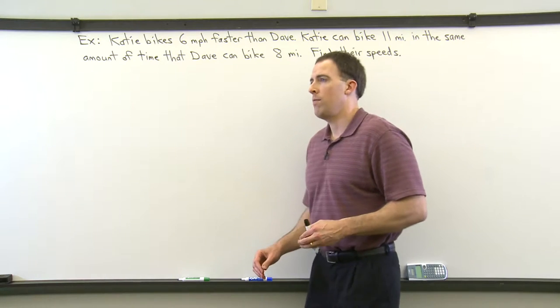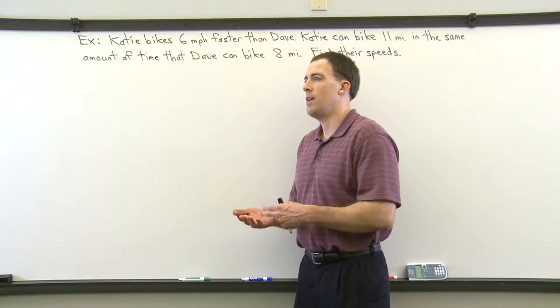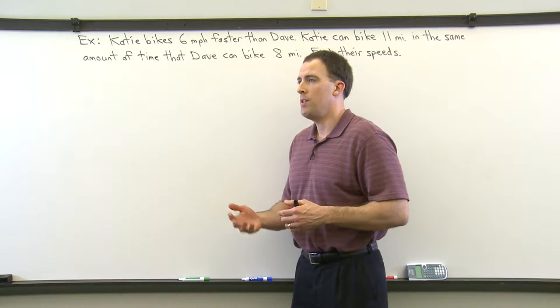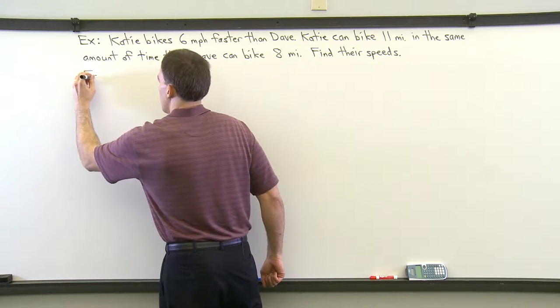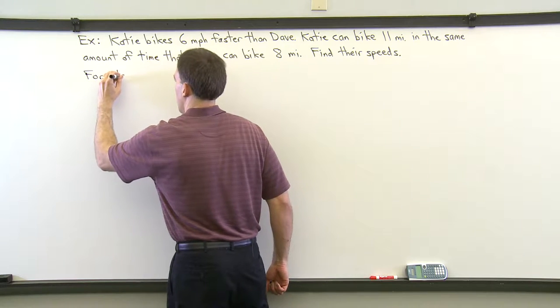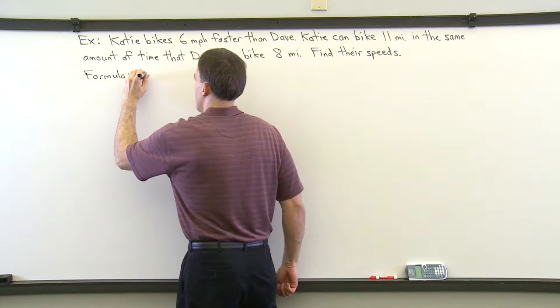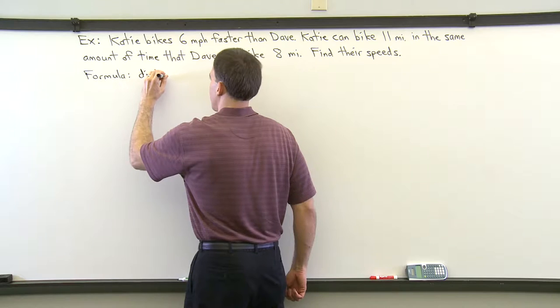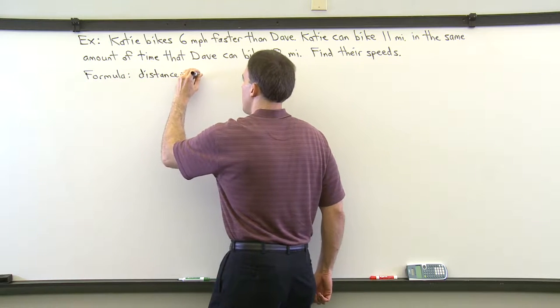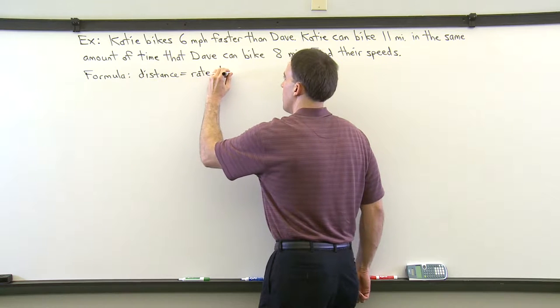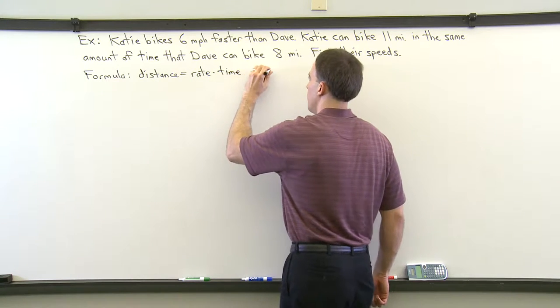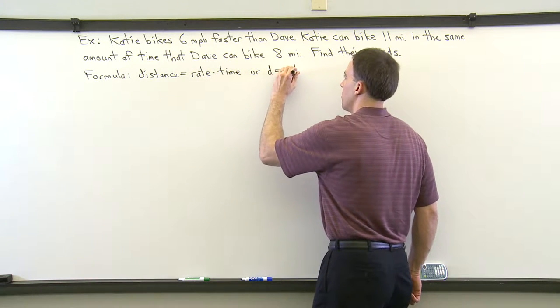Whenever you have an application problem that involves distances, speeds, and times, we need to use the formula distance equals rate times time. So here's the key formula for this type of problem. It's distance equals rate times time. Rate is a synonym for speed, so distance equals rate times time, or just more simply d equals rt.